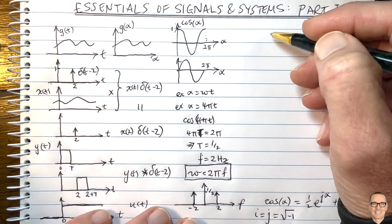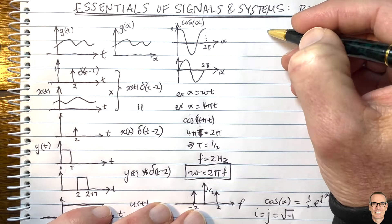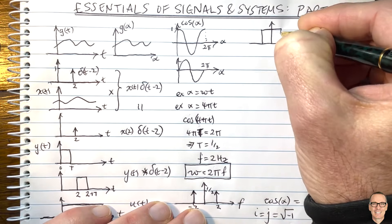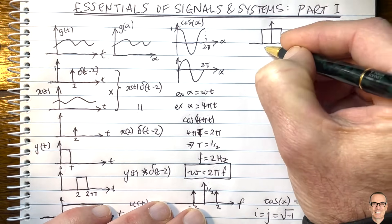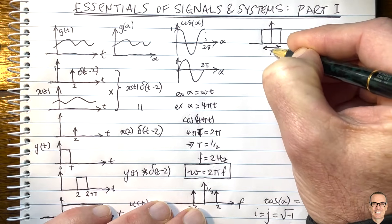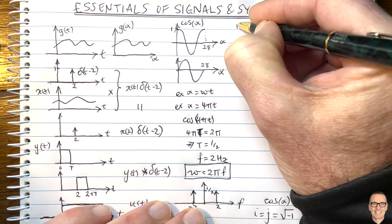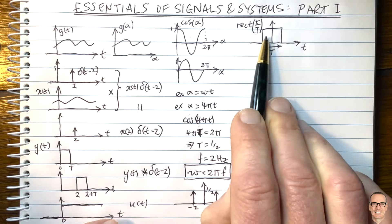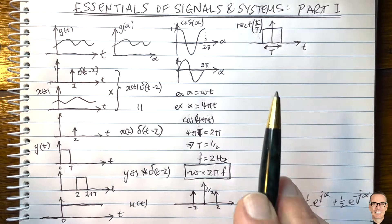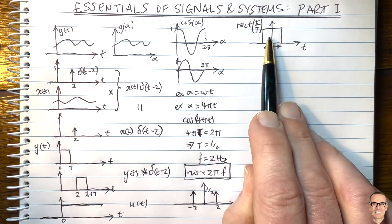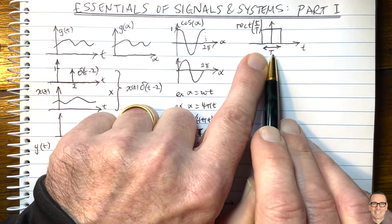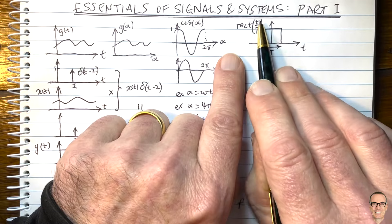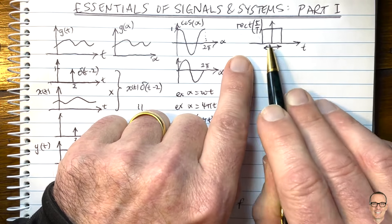Another essential function to know is the rect function — a square function. If drawn over a period capital T, it is given by the expression rect of t divided by capital T. It's absolutely essential to know that the denominator of the rect expression tells you the width of the square. You don't need a formula book; just remember that property.